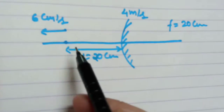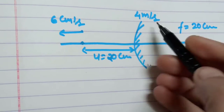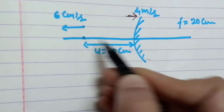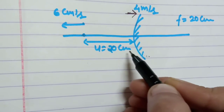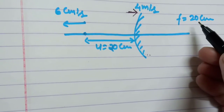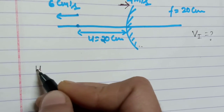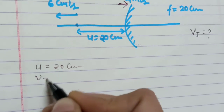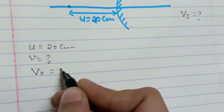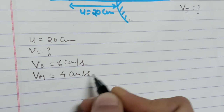Today we will discuss this example. This is a spherical mirror which is moving with a velocity of 4 meters per second in this direction. The object placed at distance u = 20 centimeters is moving with a velocity of 6 centimeters per second. The focal length is 20 centimeters. The question is: what is the velocity of the image?